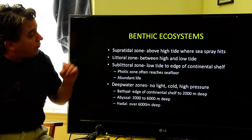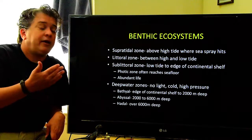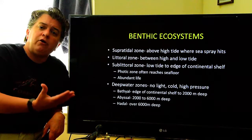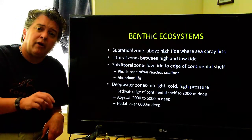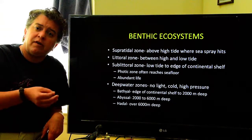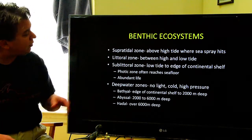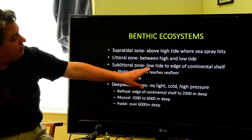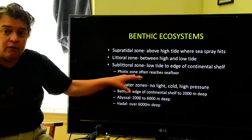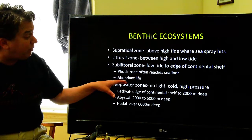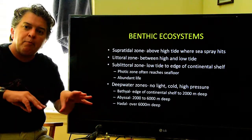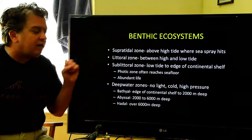The littoral zone is the area between high and low tide. This is an area that's underwater at high tide and above water at low tide. It can be a challenging place for organisms to live because of the constantly fluctuating waters. The sublitoral zone is at the low tide edge of the continental shelf, where the photic zone reaches the seafloor and we have lots of life.